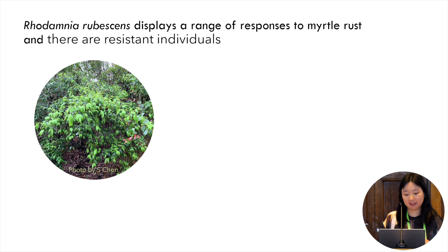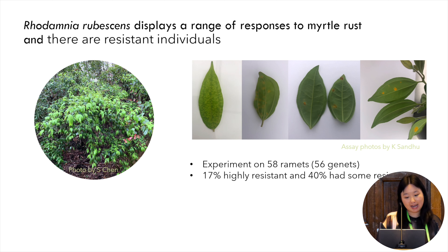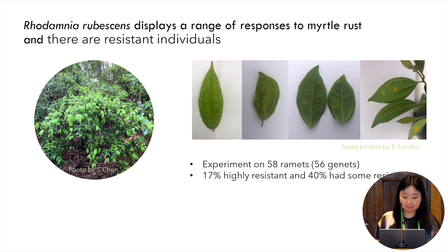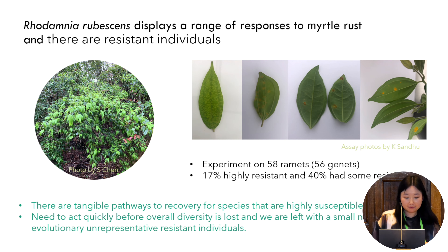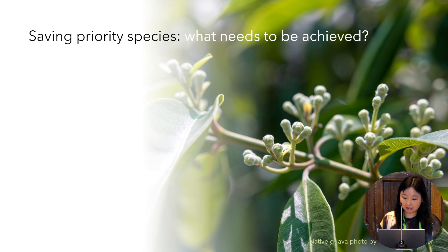How come there are healthy-looking plants in the field? Are they resistant to myrtle rust, and how can we verify this? Pilot rust assays in Rhodamnia rubescens at the Plant Breeding Institute at the University of Sydney identified 17% of individuals were highly resistant to myrtle rust and 40% had some resistance — a spectrum of responses was observed. Wild origins for resistant plants included Diamond Head, which corroborated field observations, as those healthy-looking plants were later identified in the genetic analysis to be clones, suggesting that genet likely had a resistant genotype. This highlights two important points: firstly, there are tangible pathways to recovery through a genetically-informed breeding program; and second, we need to act quickly before overall diversity is lost and we're left with a small number of evolutionarily unrepresentative resistant individuals.